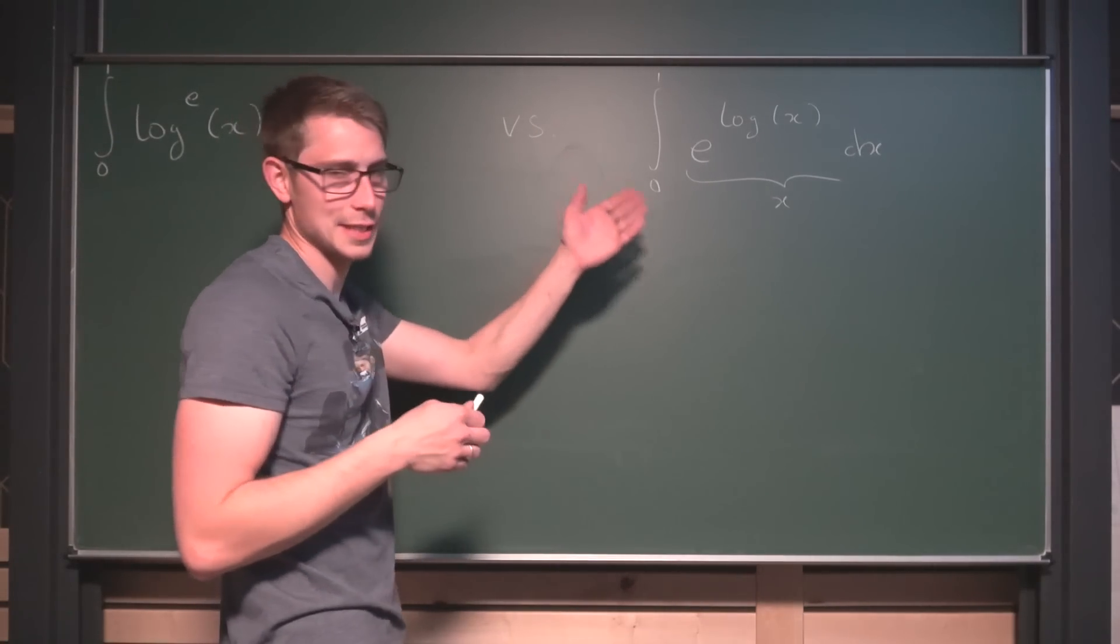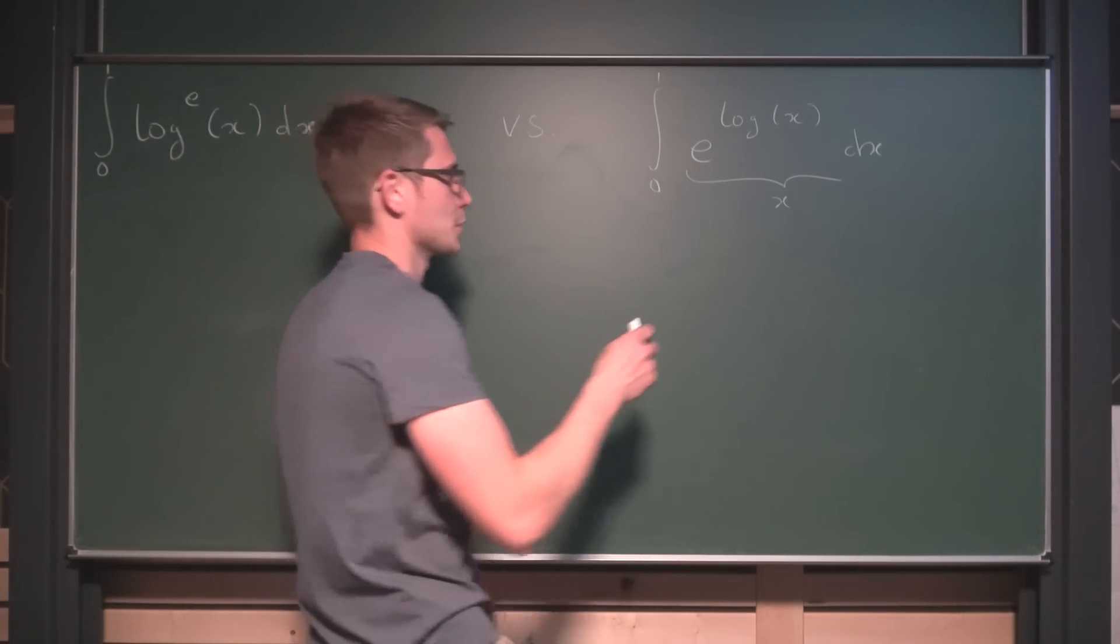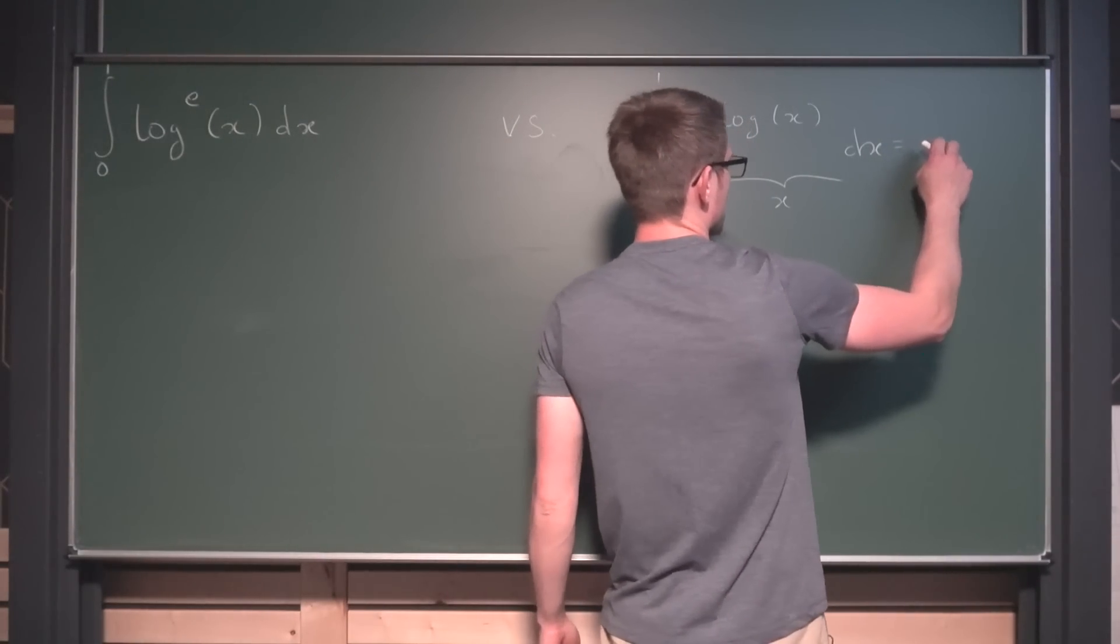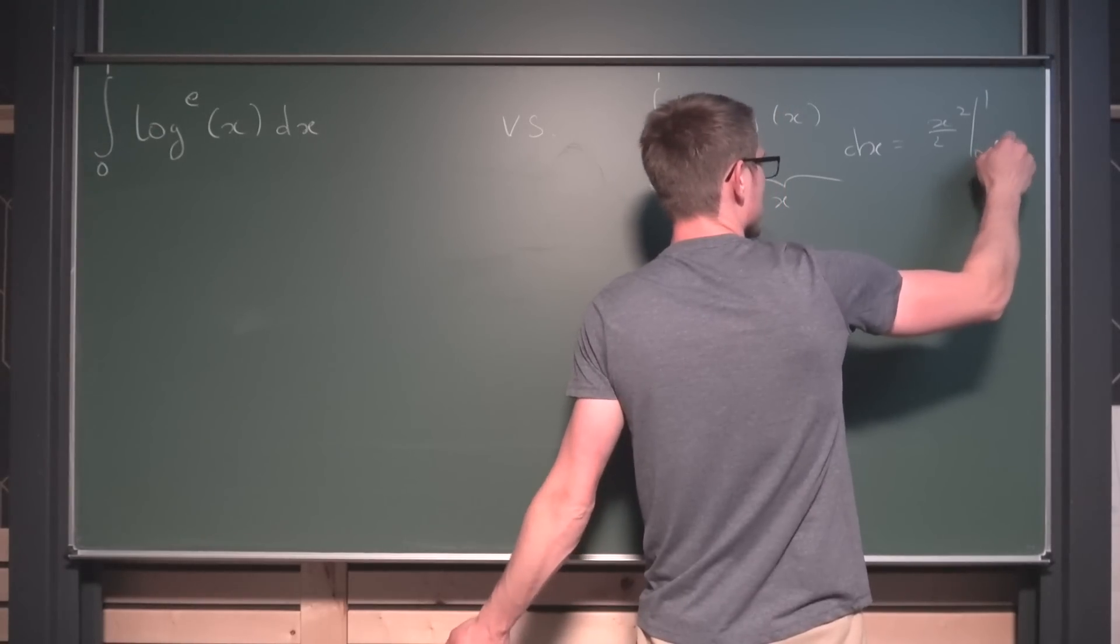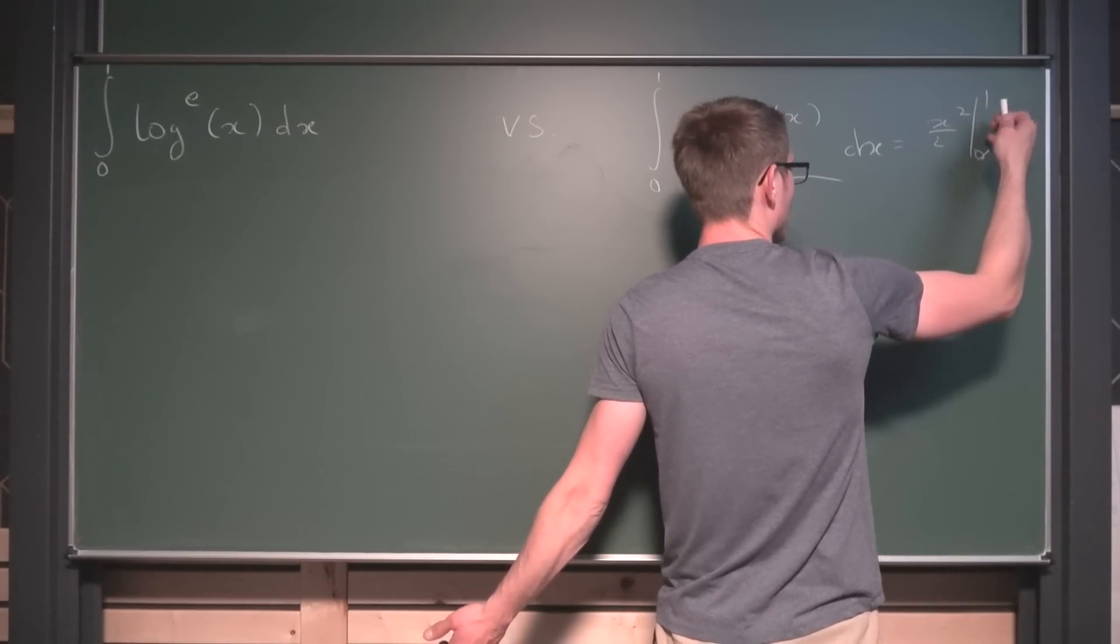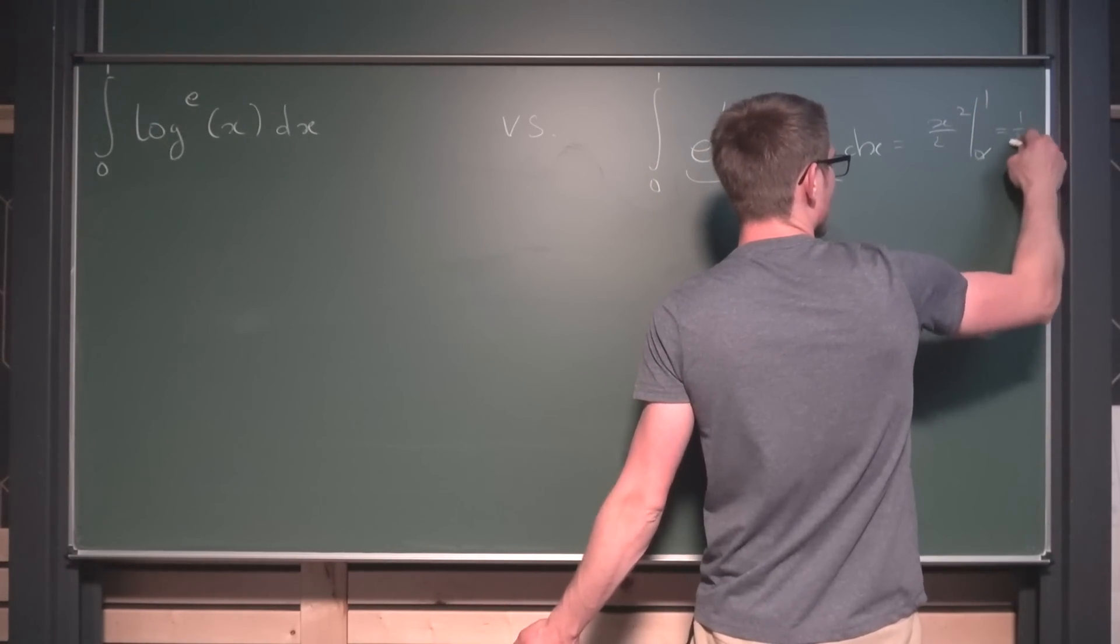And well, this is just integrating x from 0 to 1, which is the same as x squared over 2 from 0 to 1. It's going to vanish at 0, evaluate at 1. 1 squared is 1, so 1 half.